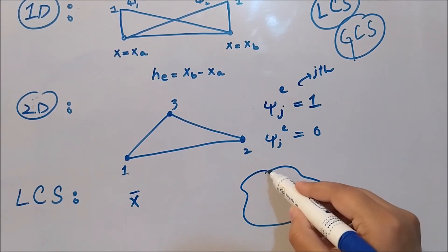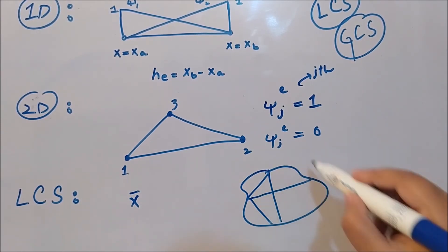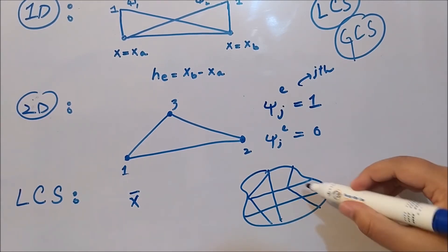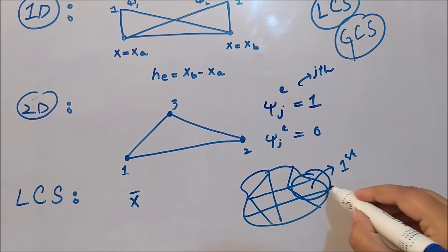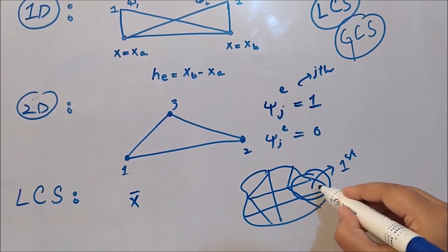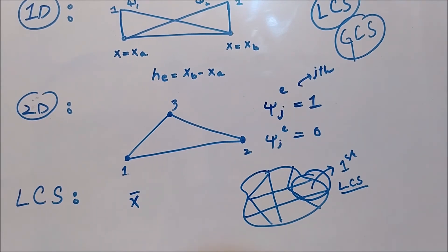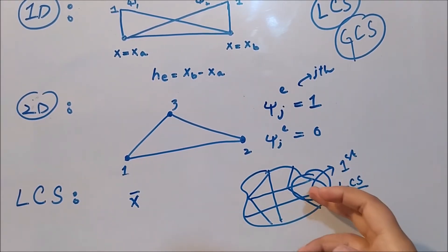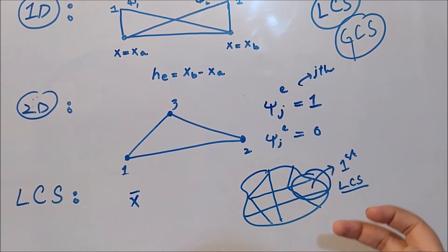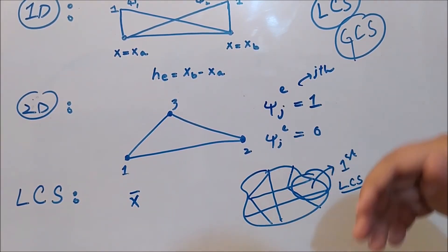Why is there a need for a local coordinate system when we have a global one? Because we can divide the whole geometry into different mesh elements. For each element, it is much easier to derive its equation in its own local coordinate system rather than the global one. Eventually all elements are analyzed locally and then assembled back into the global coordinate system.